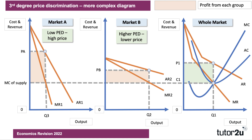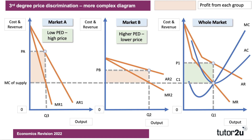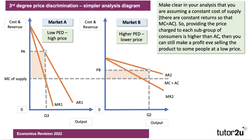This is a super diagram to draw. If you've practised this for the exam, you can draw it fairly quickly, but you will need to practise to get top analysis marks. There's a slightly easier diagram as well — I've just taken the third diagram out of the equation and said, look, we've got two markets, market A and market B, exactly the same as before. I'm assuming the cost of supply to each market is the same — make clear in your analysis that you are assuming constant cost of supply, constant returns, marginal cost and average cost the same. Providing the price charged to each group is higher than cost, you can still make a profit even selling the product to some people at a low price in market B.